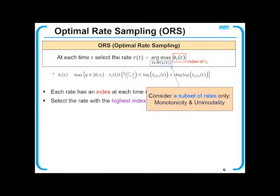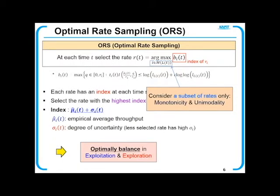It brings exploitation and exploration dilemmas. For getting high throughput, we should take the empirical best rate, but for learning those probabilities, we should try various rates.